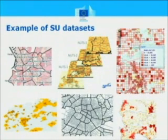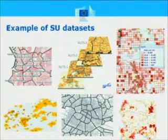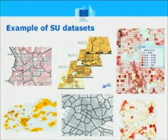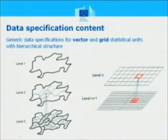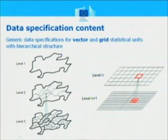On this slide, I have displayed some examples of datasets that are under the scope of INSPIRE, such as the NUTs dataset, Urban Audit, and some other gridded datasets — just to show an illustration of what kind of dataset is under the scope of this theme. I'm not going to show you UML diagrams now; I have them at the end of the presentation. But I would like to show you the main characteristics of the data model we have been developing.